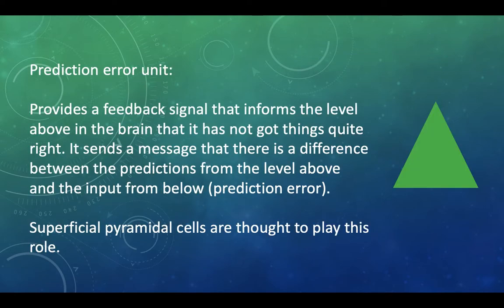Then we have its sort of opposite, if you like, the prediction error unit. This is something that's providing a feedback signal that informs the level above in the hierarchy. You haven't got things quite right. And it sends a message that there's a difference between the predictions from the level above and the input from below. And it's superficial pyramidal cells that are thought to play this role.